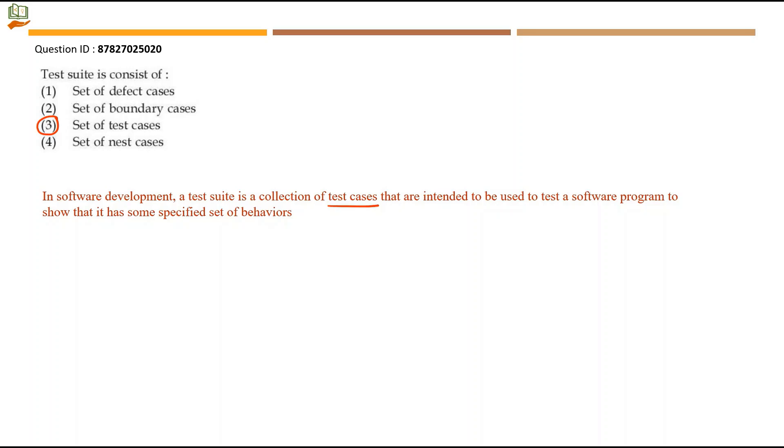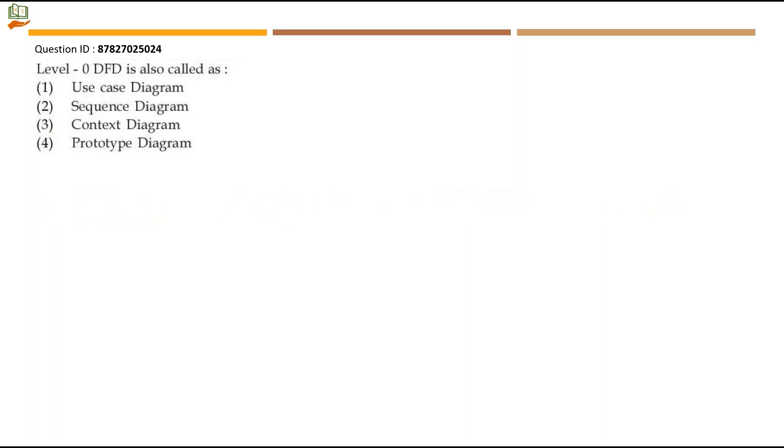Option number 3 will be the right answer. Boundary cases are like boundary conditions and defect cases are like faulty conditions. Set of nest cases is not relevant here. In order to test a software program to show that it behaves in a certain way, they develop many test cases. That collection is called a test suit.